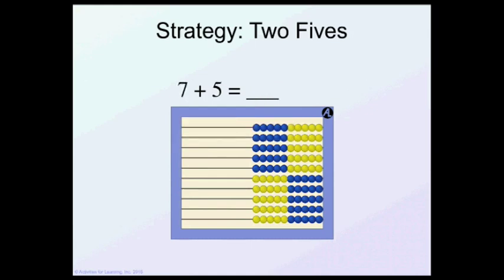Let's do another one. 7 plus 5. 7 on the first row, 5 on the next. Can you see the answer? The blue beads are 10 and 2 more with the yellow. So 10 and 2 is 12.